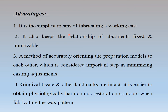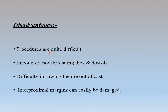Advantages of this method: it is the simplest means of fabricating a working cast and keeps the relationship of abutments fixed and immovable. This method is more accurate as it allows orienting the preparation models to each other, which minimizes cast adjustment. Gingival tissue and other landmarks are also intact and it is easier to obtain physiological harmony of restoration contours when fabricating wax patterns. Disadvantages: the procedure is a little difficult; you can encounter poorly seating dies. There is difficulty in sawing the die out of the cast, and interproximal margins can easily be damaged if you're not careful.